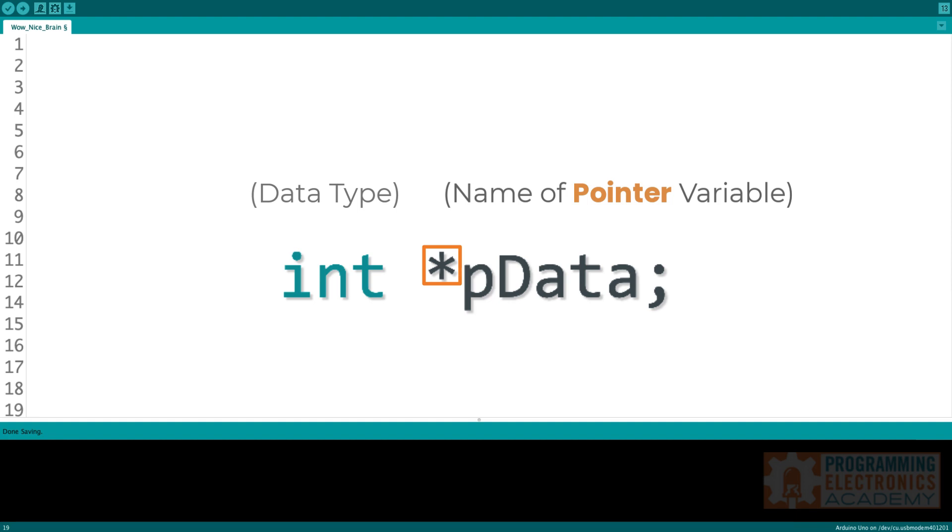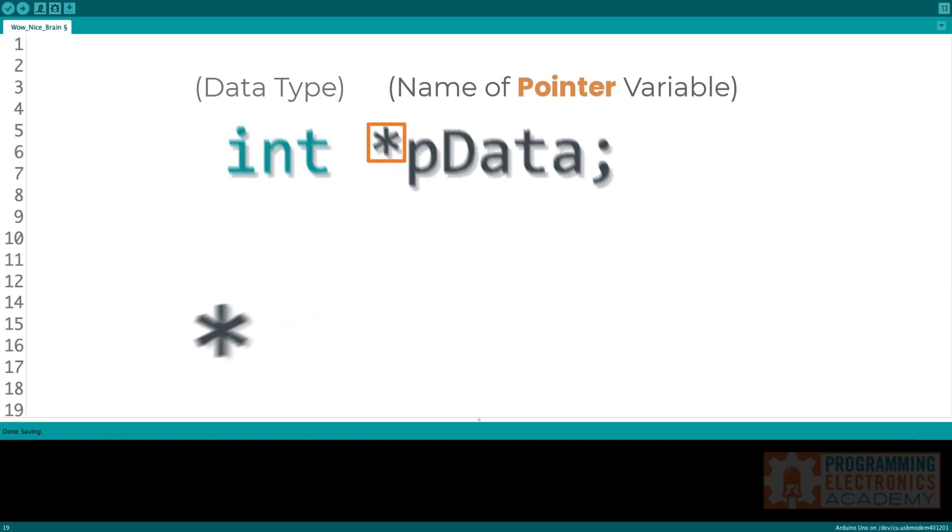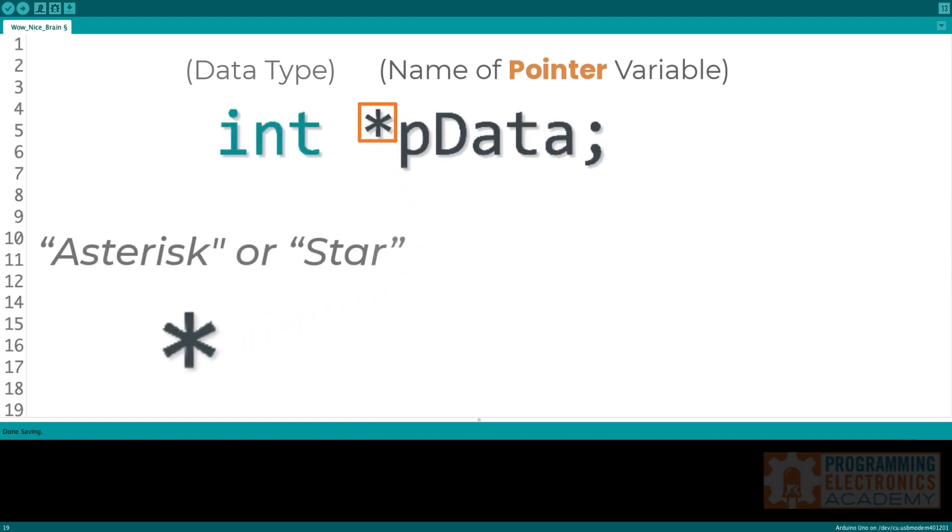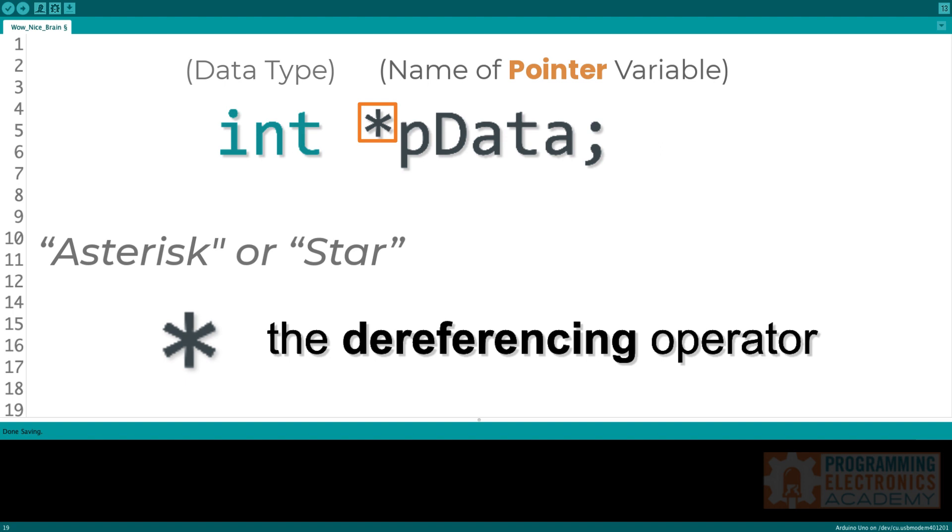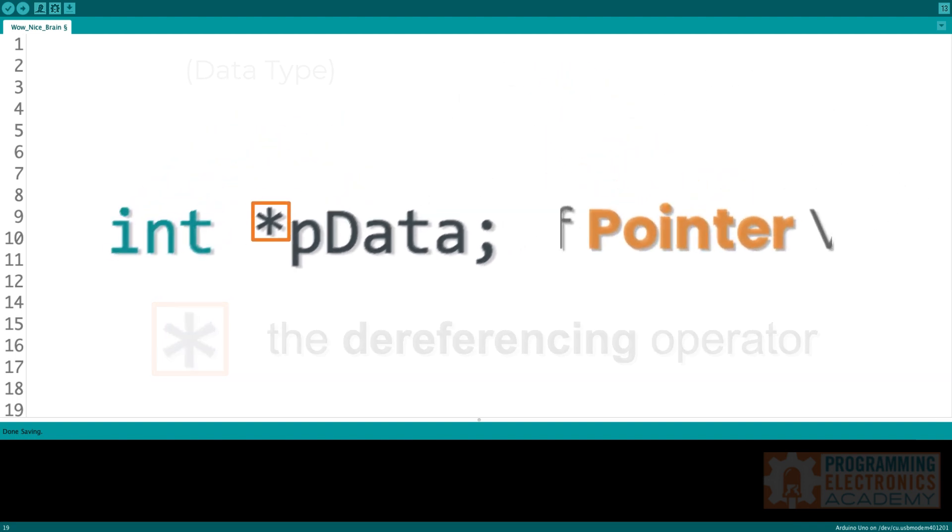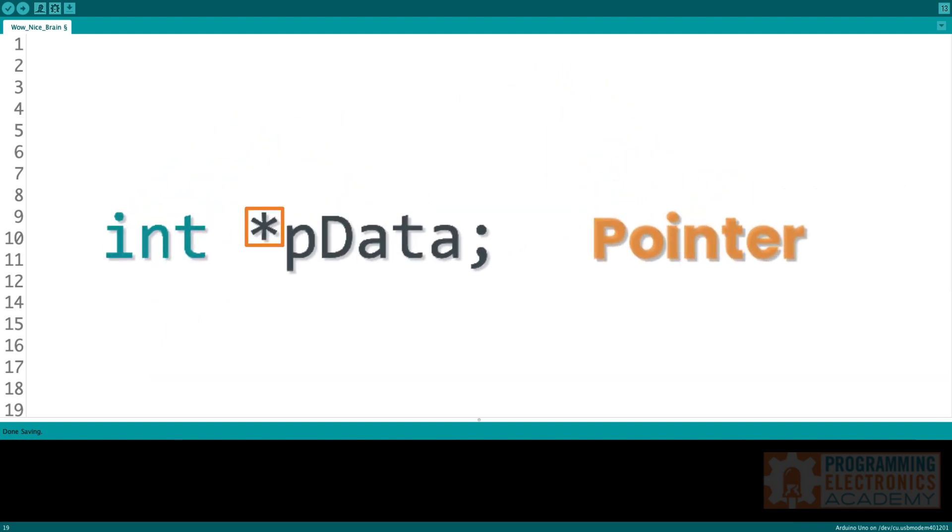Now listen, I know what you're thinking. What the heck is that asterisk for? That asterisk is called the dereferencing operator. It's also known as the indirection operator. It's used when declaring a pointer so that the Arduino IDE knows that this is no regular variable, that this is a pointer variable. And as you will learn, pointer variables get handled differently than normal variables.